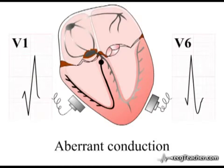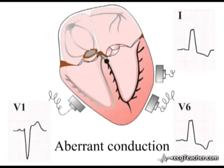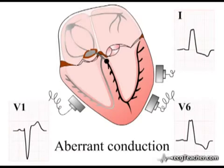There are other causes of aberrancy within the ventricles which you need to be aware of. So far we have considered bundle branch block as a permanent entity on the ECG. However, it is possible for conduction in one of the branches of the bundle of His to fail on an intermittent or transient basis. This form of aberrant conduction can be very important when diagnosing arrhythmias.